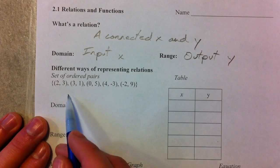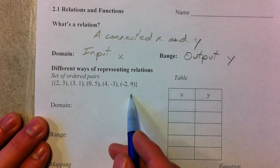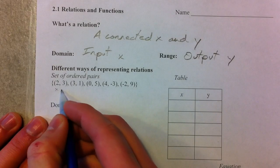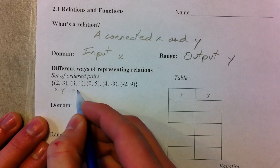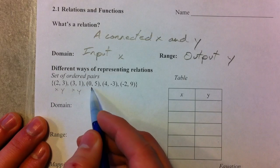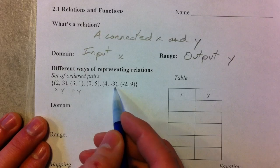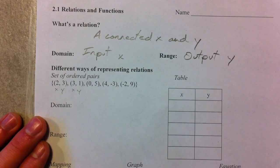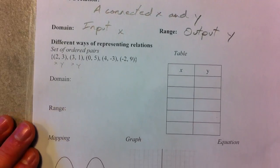So we've got a set of ordered pairs. This is one way of representing a relationship. This is X and a Y, and X and a Y. And so that connects 2 to 3, and 3 to 1. When you have 0, you have 5. When you have 4, then you have negative 3. If you have the starting point, you have the ending point, essentially.